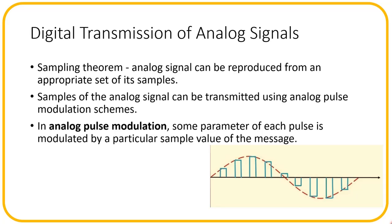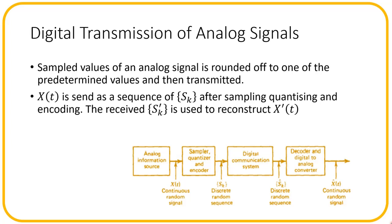In analog pulse modulation, some parameter of each pulse is modulated by a particular sample value of the message. The method of transmitting sampled values of an analog signal is to round off or quantize the sampled values to one of a predetermined set of values, and then transmit the sampled and quantized signal using a digital modulation scheme. In the block diagram of such a system, we have an analog information source whose output x(t) is converted into a symbol sequence s(k) using a sampler, quantizer and an encoder.